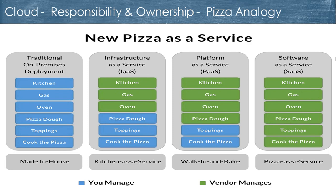In the third case, you say you don't want to cook, so you just order your pizza. You call your favorite pizza provider and they get the pizza for you. You're not responsible for the kitchen, gas, oven, or pizza dough — the pizza provider creates the pizza for you. But once it arrives at your home, you are responsible for a few things: you've got to decorate it, have a dining table, a place to sit and eat.